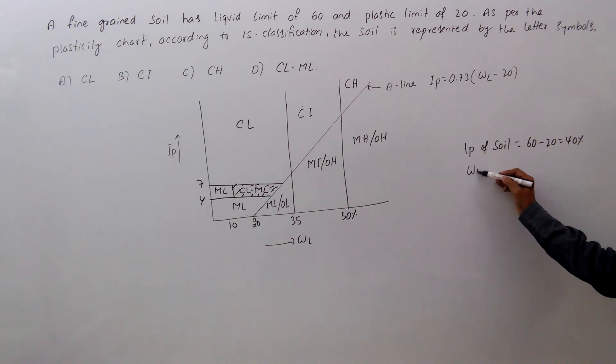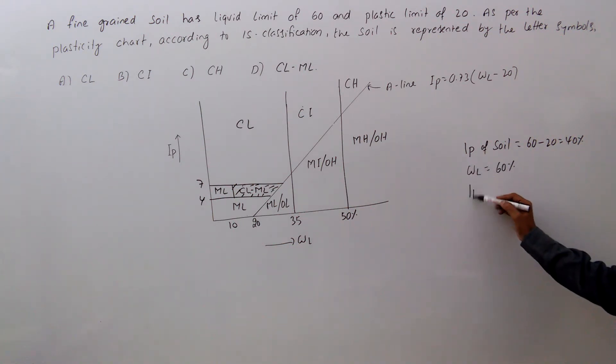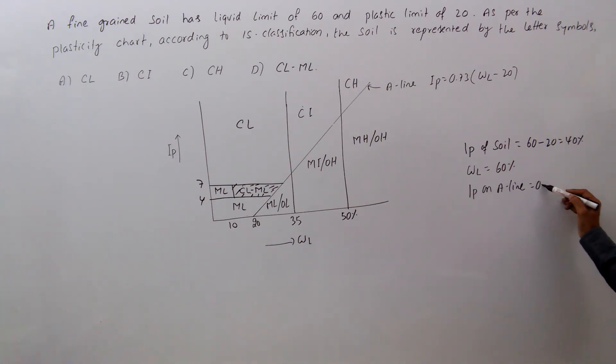And what is WL? WL equal to 60%. What is IP on A line? 0.73 into 60 minus 20, that is 40 into 0.73, 29.2.